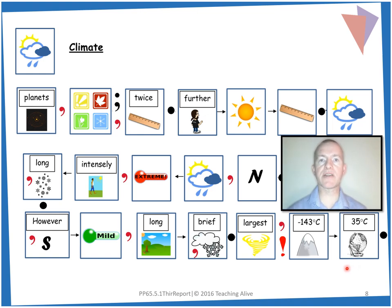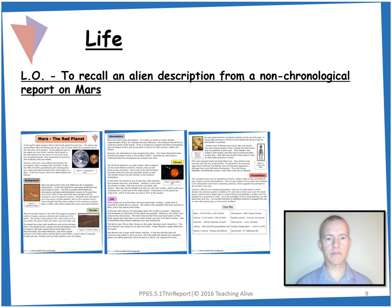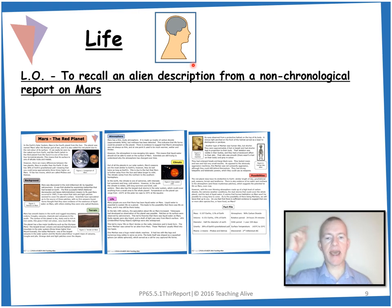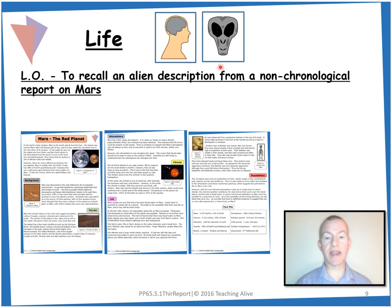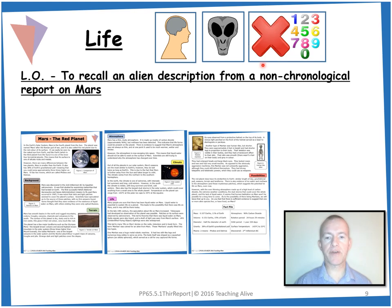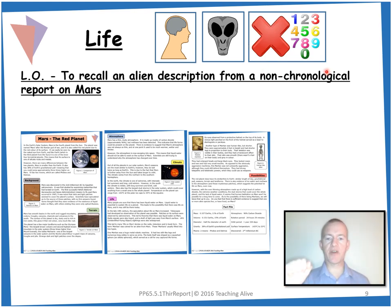Pause and see if you can practise those actions again please. Today our learning objective is to recall — we can point to our head and our brain — an alien description from a non-chronological report on Mars. For non-chronological, we can cross our arms as a cross, and then count on our fingers.